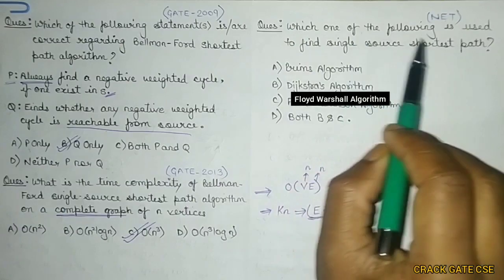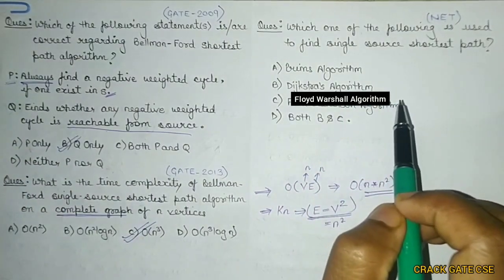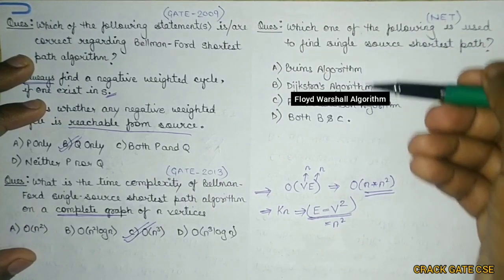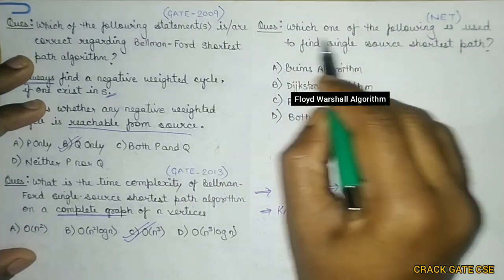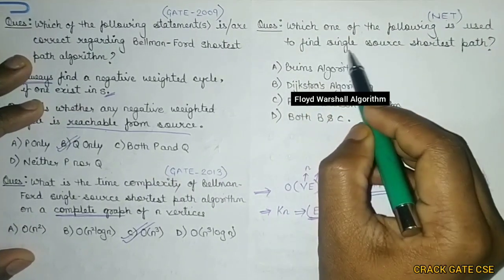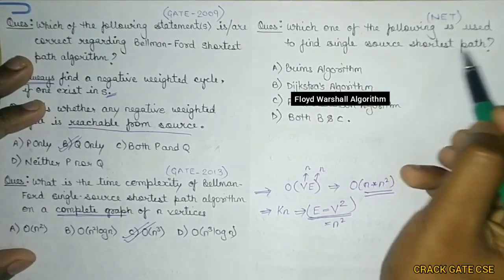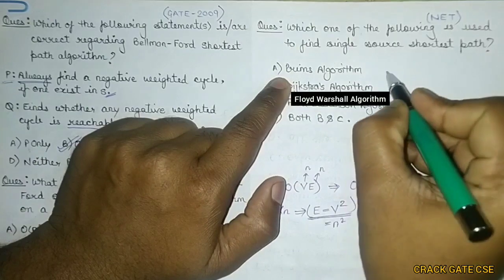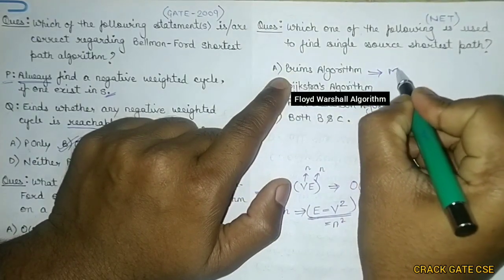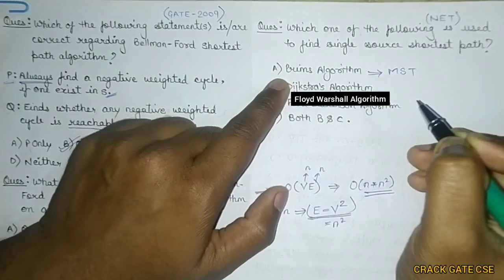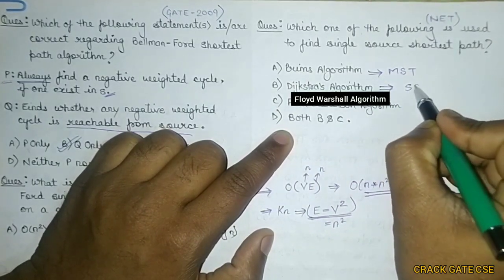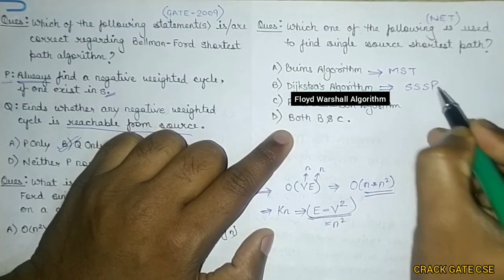Now let's talk about this third question. A similar kind of question came in UGC Net where they have given some algorithm and they have asked which of the following is used to find out the single source shortest path. So we know that the Prim's algorithm is used to find out the minimum spanning tree. The Dijkstra algorithm is used for finding the single source shortest path.